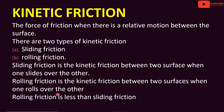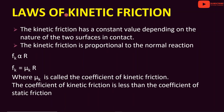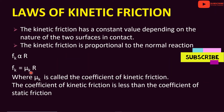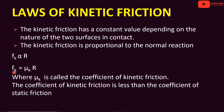Rolling friction is less than sliding friction. The kinetic friction has a constant value that depends on the nature of the two surfaces in contact. The kinetic friction is proportional to the normal reaction: Fk is equal to mu_k times R, where mu_k is the coefficient of kinetic friction. Thus, mu_k equals Fk divided by R — the ratio of the force of kinetic friction to the normal reaction.